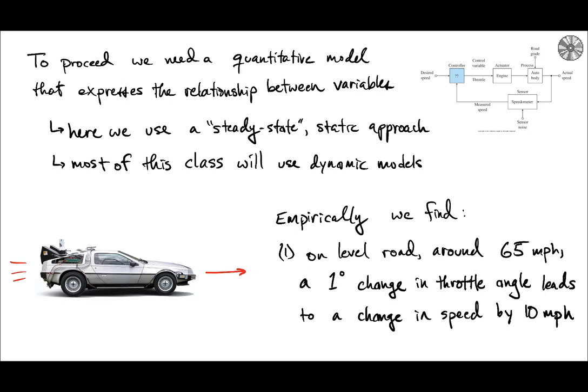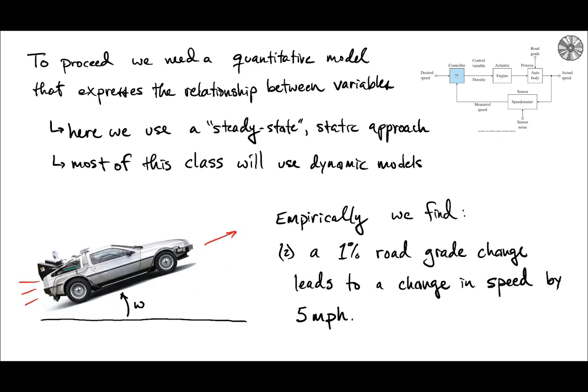In addition we observe that if the car is going up a road grade of one percent that leads to the speed decreasing by five miles per hour, and then if it's going down by one percent then that means that it's actually going to move faster by five miles per hour, and so this is additive so if it was two percent then we would get 10 miles per hour and so on.